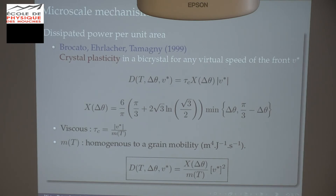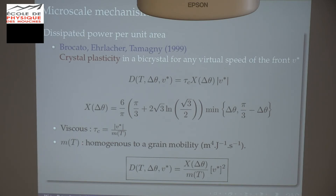Here you have the analytic function — it's very simple, but it's for crystal plasticity. Since grain growth is more viscous, I transform the critical shear stress for slip system activation into something proportional to speed, ending with a viscous quantity. The proportionality factor is homogeneous to grain mobility — so for me it's a grain mobility. Finally, the dissipated power, seen as a viscous phenomenon, is something analytical divided by mobility and quadratic in the grain boundary speed.